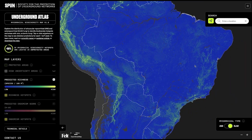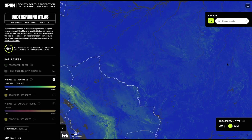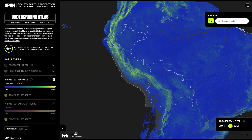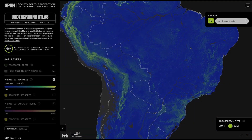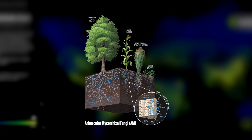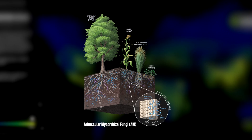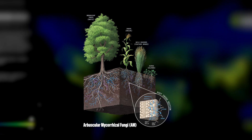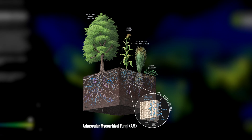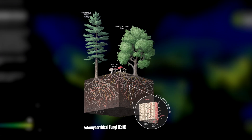These are two major mycorrhizal types found across underground ecosystems. AM fungi are associated with approximately 80% of all plant species, partnering with plants in grasslands, croplands, and some tropical forests. They never produce mushrooms.